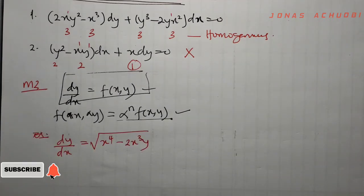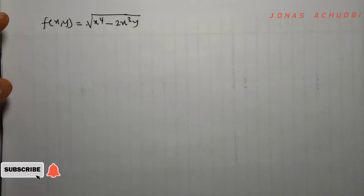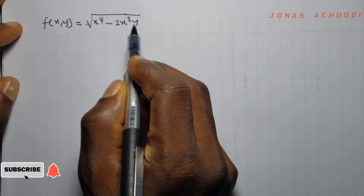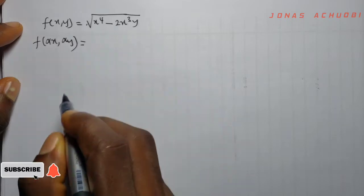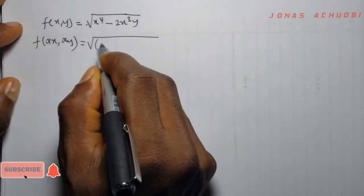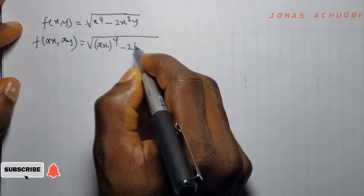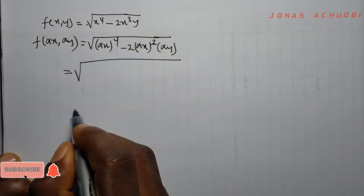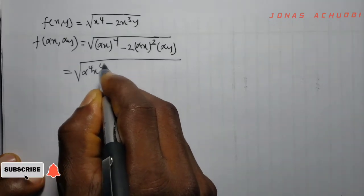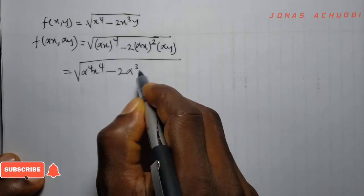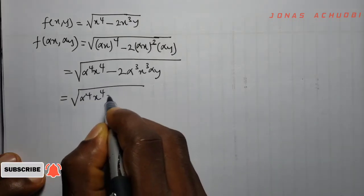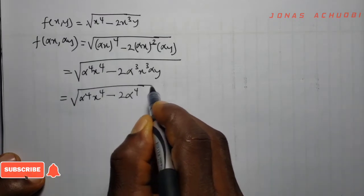We'll take an example to illustrate. We have dy/dx = √(x⁴ − 2x³y). Here, f(x, y) = √(x⁴ − 2x³y). We introduce alpha: f(αx, αy) = √((αx)⁴ − 2(αx)³(αy)). Opening the bracket gives √(α⁴x⁴ − 2α³x³ · αy), which simplifies to √(α⁴x⁴ − 2α⁴x³y).